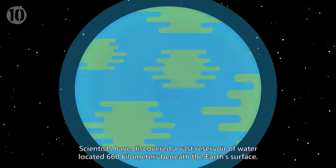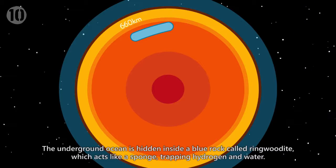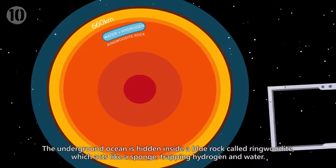Secret Ocean. Scientists have discovered a vast reservoir of water located 660 kilometers beneath the Earth's surface. The underground ocean is hidden inside a blue rock called ringwoodite, which acts like a sponge, trapping hydrogen and water.